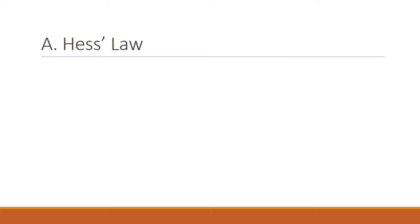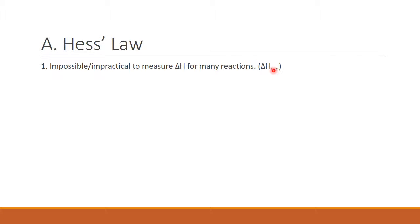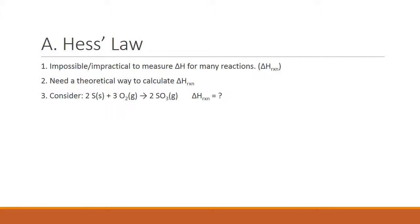Let's look at what Hess's law is and why we need it. We need Hess's law because it is impossible or at least impractical to measure the enthalpy change for many reactions. The symbol we use is delta H with the subscript RxN for reaction. Commonly, we refer to that as a heat of reaction, even though it is technically an enthalpy change.